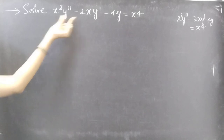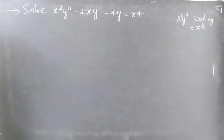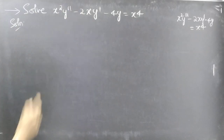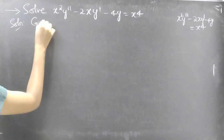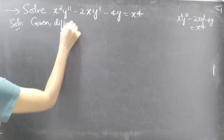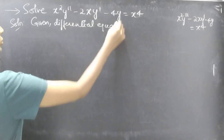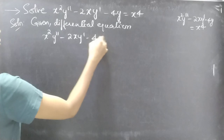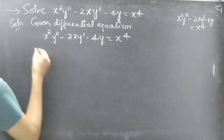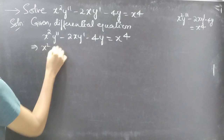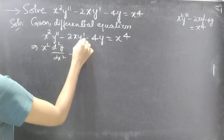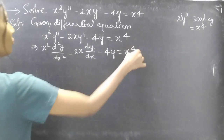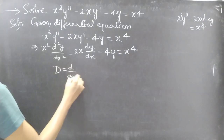Problem to solve: x² y'' minus 2x y' minus 4y equals x⁴. We are given this differential equation with variable coefficients. We can write y'' as d²y/dx² and y' as dy/dx, so the equation becomes x²(d²y/dx²) minus 2x(dy/dx) minus 4y equals x⁴. We know that D is a differential operator with independent variable x.